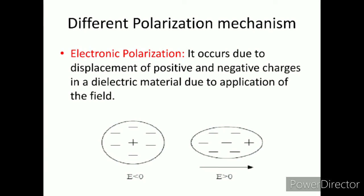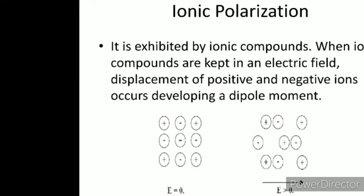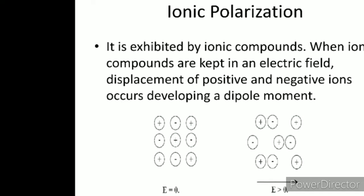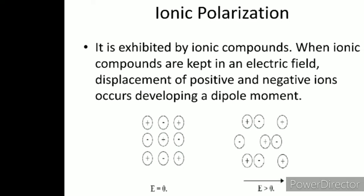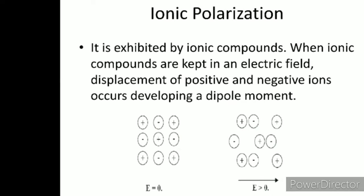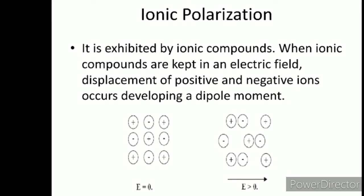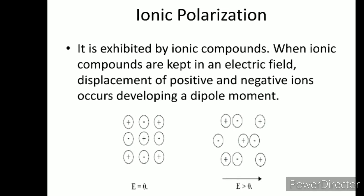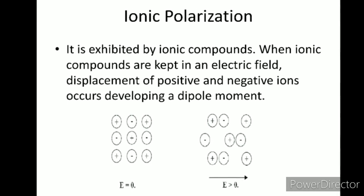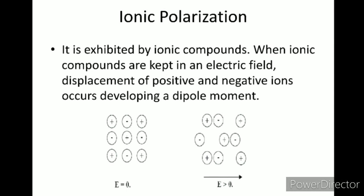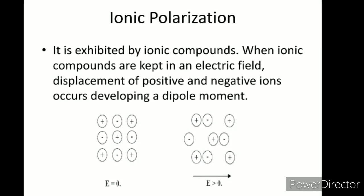The second type is ionic polarization. This is exhibited by ionic compounds like NaCl and HCl. When ionic compounds are kept in an electric field, the displacement of positive and negative ions occurs, developing a dipole moment. In the first figure you can see the ions without electric field, and in the second diagram you can see how the ions distribute when you apply the electric field.